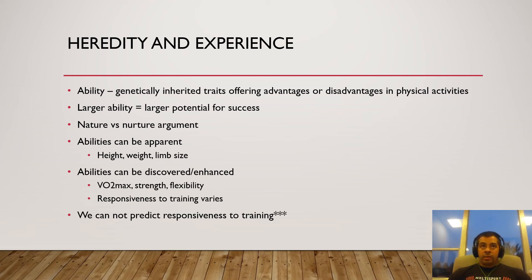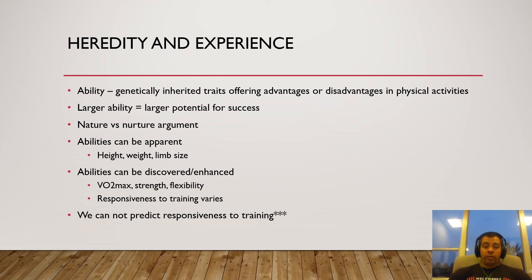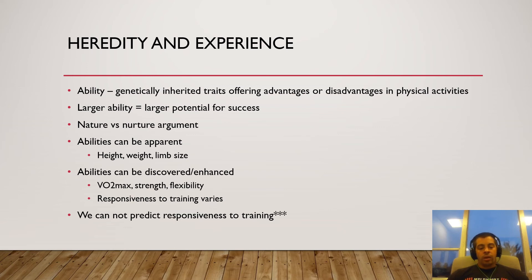Ability is incredibly important. Usain Bolt, to be the fastest man ever, has to have an incredible amount of fast-twitch fibers and the ability to develop force as quickly as possible. If Usain Bolt tried his hardest, he would never have held the world record in the marathon. Likewise, Michael Jordan probably would never have been the best sprinter ever — he just didn't have that genetic ability. I think both nature and nurture are very important.